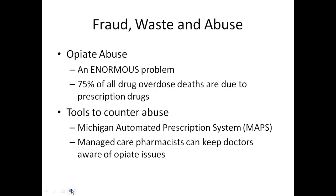Fraud, waste, and abuse — the biggest issue is opiate abuse. The last statistic we read is that 75% of all drug overdose deaths are due to prescription drugs, not street drugs. However, with all hydrocodone products like Vicodin and Lortab moving to Schedule II, we are already seeing a spike in heroin usage because in some places, heroin is now cheaper and easier to get than Vicodin or Lortab. Making prescription opioids harder to get may unfortunately have the unintended consequence of driving more people to heroin.